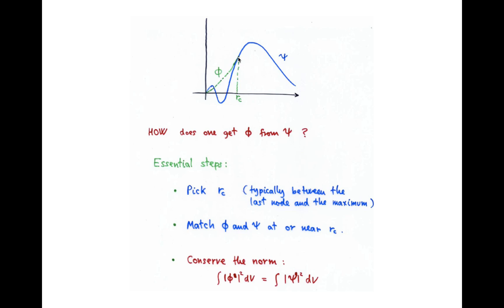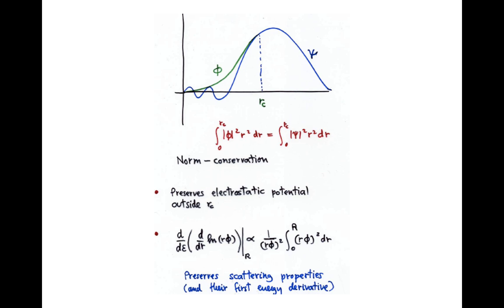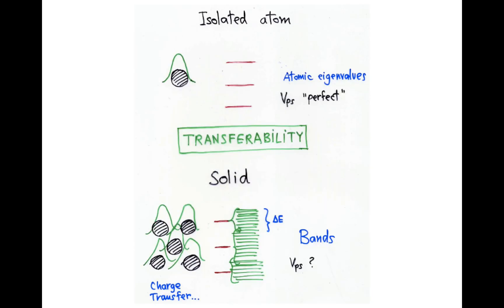And also a very important second condition is that the norm of the two wave function and the pseudo wave function should be the same. Now this is important from the point of view of electrostatics, so that the long-range effect of the charge is the same. But also because this is a result of scattering theory, the change with energy of the scattering properties is related to the norm. So if the norm is the same, the change, not just the value of the scattering property at the point at which we are fitting, but also its derivative with respect to energy is the same.